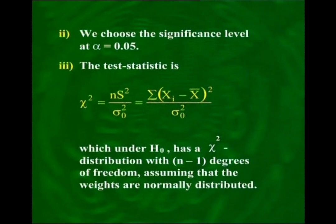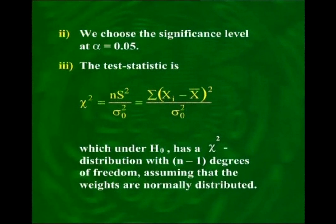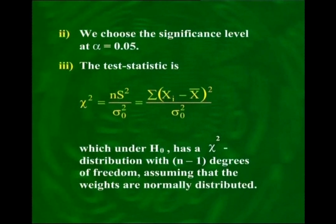Step 2 is the level of significance, which we set at 5%. Step 3 is the test statistic. You will recall from the last lecture that n·s² over σ², or equivalently Σ(x − x̄)² over σ², follows the chi-square distribution with n−1 degrees of freedom. Since we always begin by assuming that H0 is true, we write n·s² over σ₀², where σ₀² is the hypothesized value under H0.